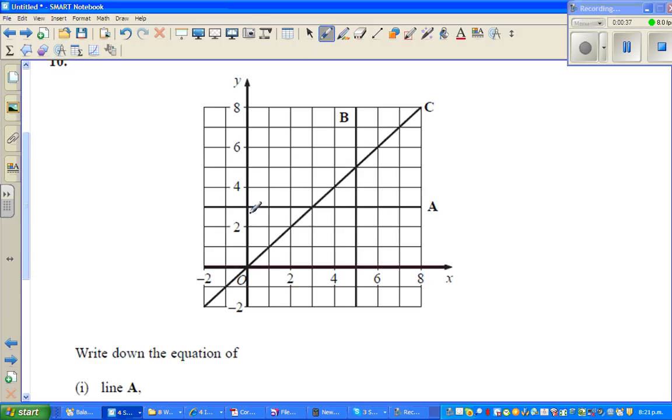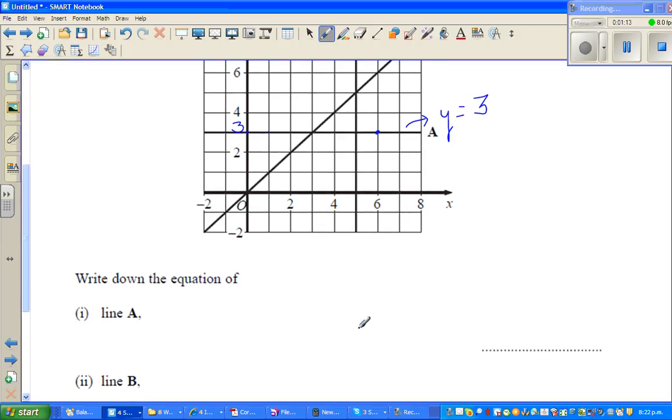Now when you look at line A, if you take any point on line A, it corresponds to 3 on the y-axis. So this is 3, this is (0, 3), this is (1, 3), this is (2, 3), and so on. So each point on the line corresponds to 3 on the y-axis. So this line is called y equals 3. The reason being each point corresponds to 3 on the y-axis. So the line A is y equals 3.